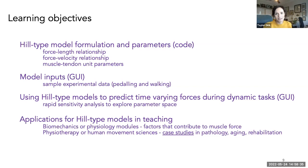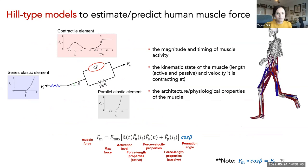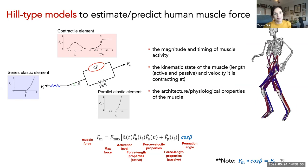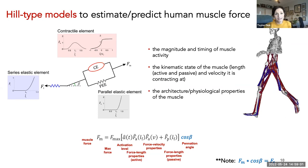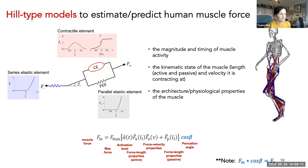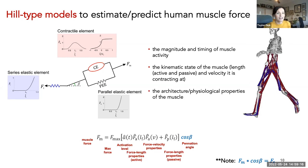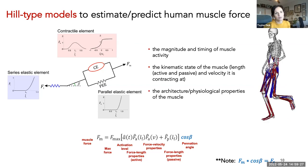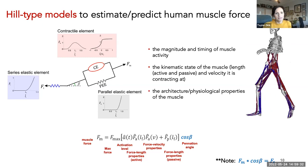In a hill-type model, muscle force depends on the magnitude and timing of muscle activity, as well as the kinematic state of the muscles — the length and velocity that the contracting fibers are operating at — and some features of architecture and physiological properties. More specifically, muscle force is the product of activation, the force-length, and the force-velocity properties; you then add in the passive force-length properties, and scale based on maximum isometric force and, in pennate muscles, the angle that the fibers lie relative to the line of action.